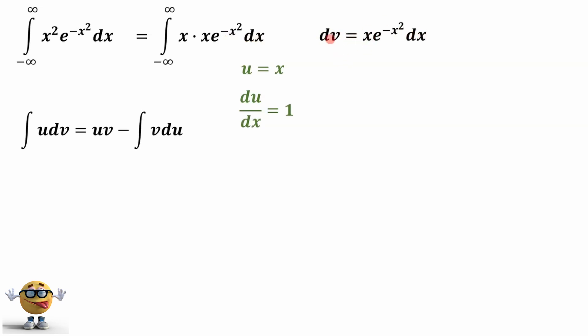To evaluate this, or to do the integral of this to find v, we're going to do a u substitution, or an n substitution. We'll set n equal to the exponent, negative x squared. That means dn dx, the derivative of n with respect to x, is equal to negative 2x using the power rule.